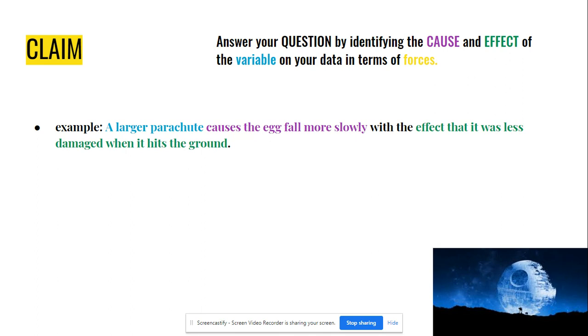This example can be erased and this is where you'd be writing in your claim. Claims are usually one sentence and they're kind of like your thesis statement when you think about a paragraph. So a larger parachute causes the egg to fall more slowly with the effect that it will be less damaged when it hits the ground.